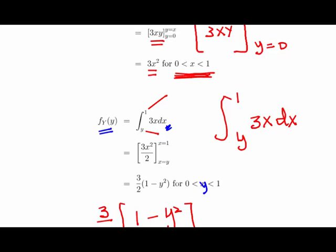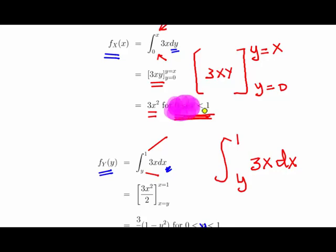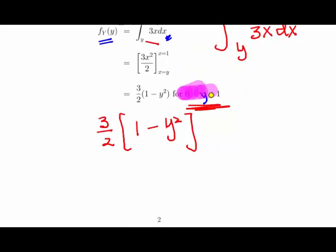A remark on the limits: the marginal density of y is between 0 and 1, and similarly for x. We don't have further information about the range beyond what the joint PDF told us, so for simplicity the range of values for both marginal densities is 0 to 1, and we'll use those in the next part of the question.